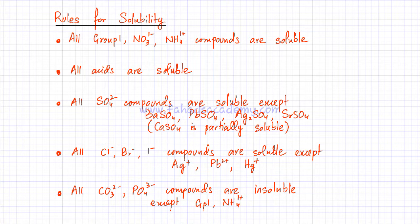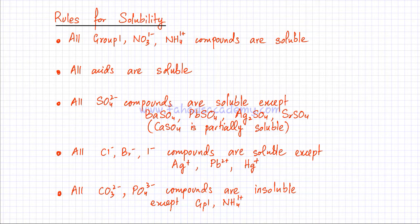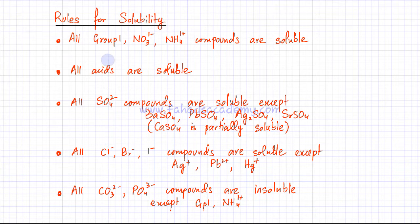The first rule states that all Group 1, NO3⁻, and NH4⁺ compounds are soluble, which means that any compound that has a Group 1 metal ion, a nitrate ion, or an ammonium ion in it is going to be soluble. For example, sodium sulfate, Na₂SO₄, would be soluble because it contains sodium, which belongs to Group 1.